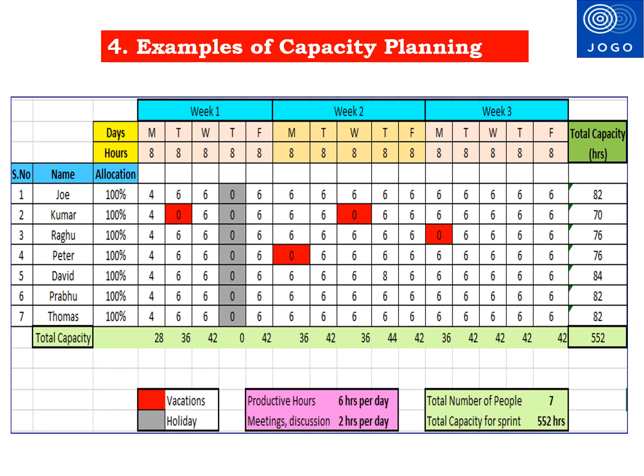You can see an example of the Capacity Planning Excel template in this slide. As per this example, the sprint duration is 3 weeks, shown as week 1, week 2, and week 3 in the top row. 15 working days are considered for the 3-week sprint, excluding Saturdays and Sundays — meaning working days are Monday to Friday only. The second column has team member names: Joe, Kumar, Ragu, etc. Standard working duration is 8 hours per day, mentioned in the third row.